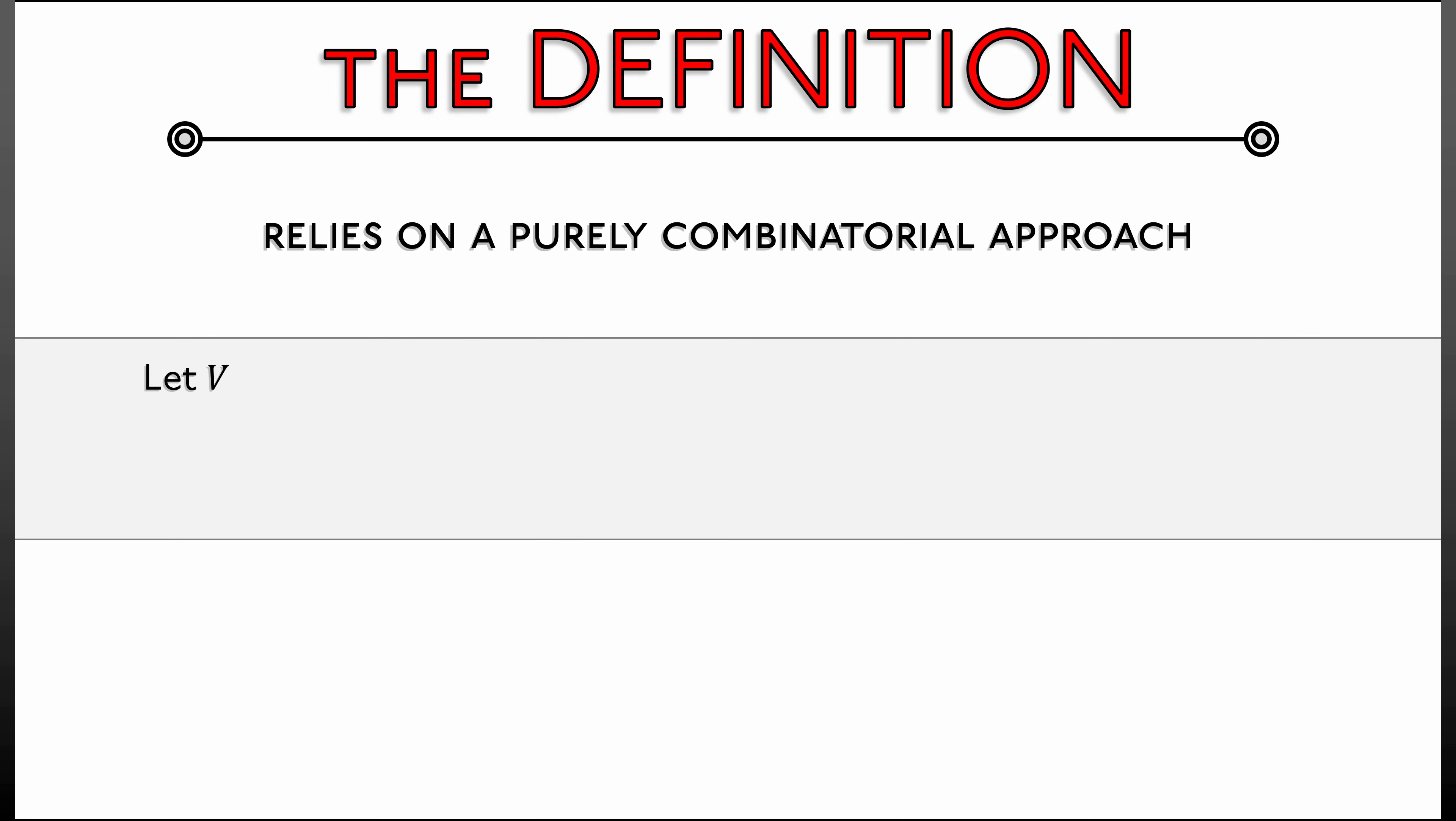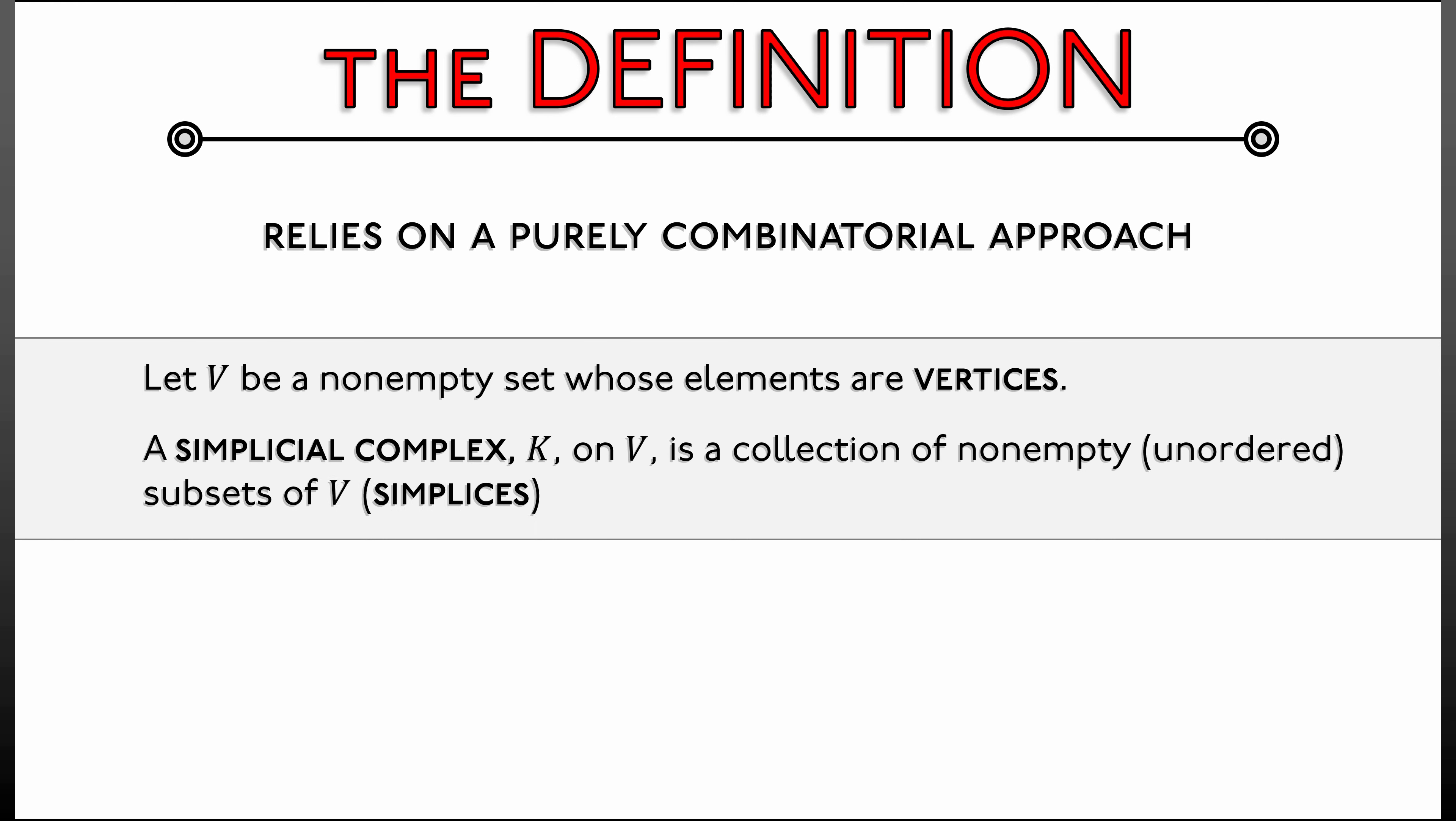One begins with a set V, a non-empty ground set, whose elements are called vertices. A simplicial complex K on this ground set V is a collection of non-empty, unordered subsets of V. These are called the simplices, that satisfy the following conditions.